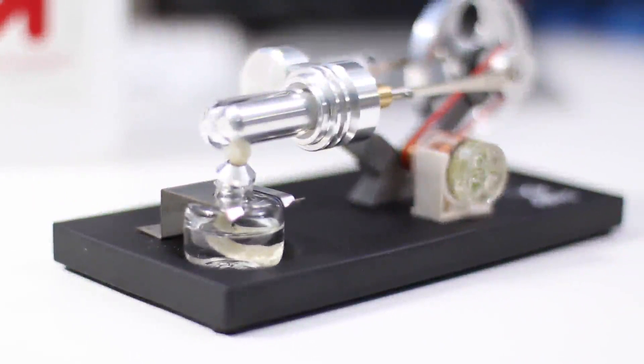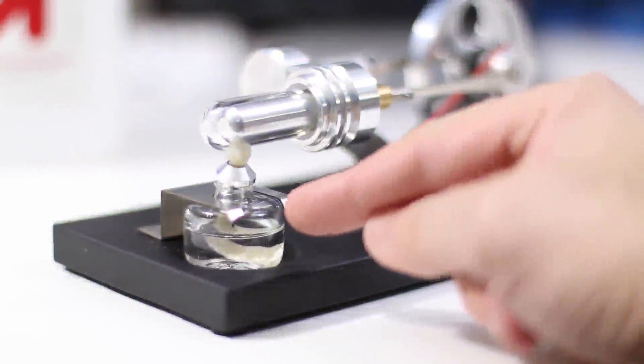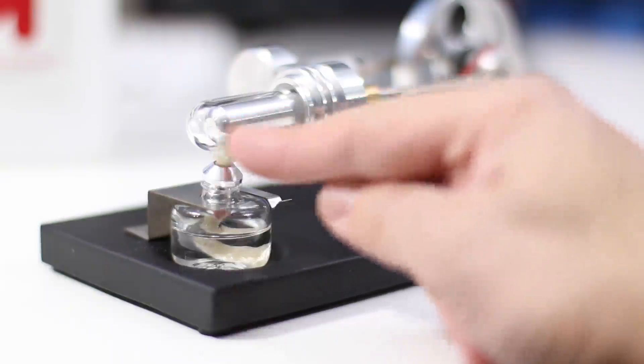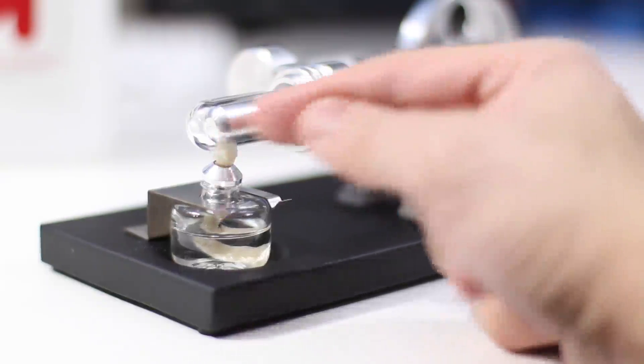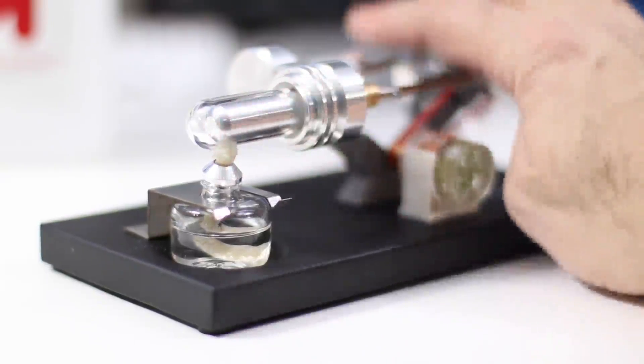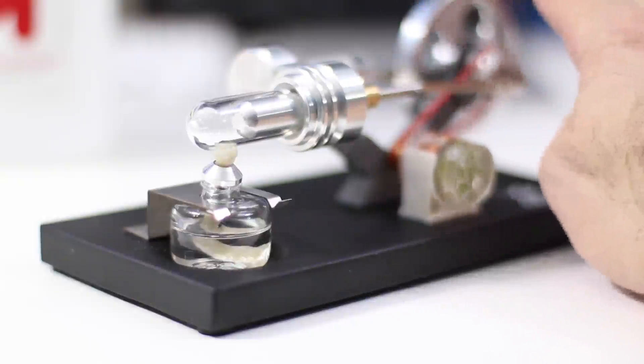So basically what we're talking about is you light the lamp, it then heats up the air inside of the cylinder. What's nice about this Stirling engine is since the cylinder is glass, you can see the piston as it moves back and forth through each cycle.